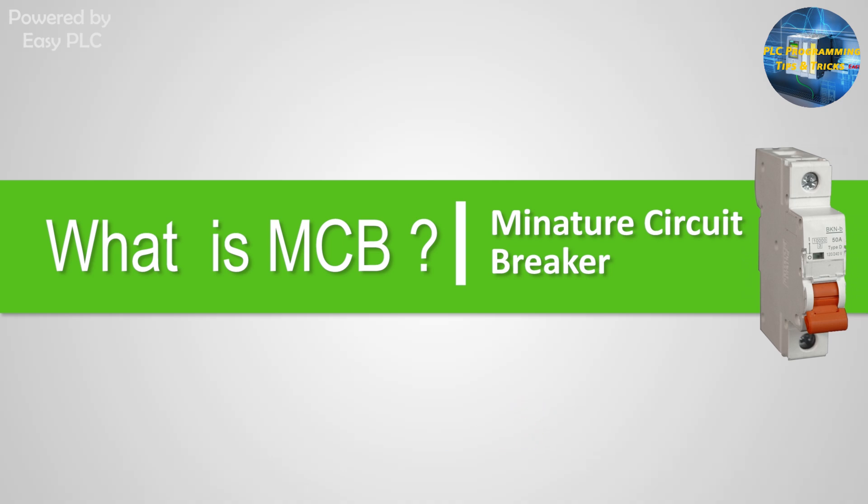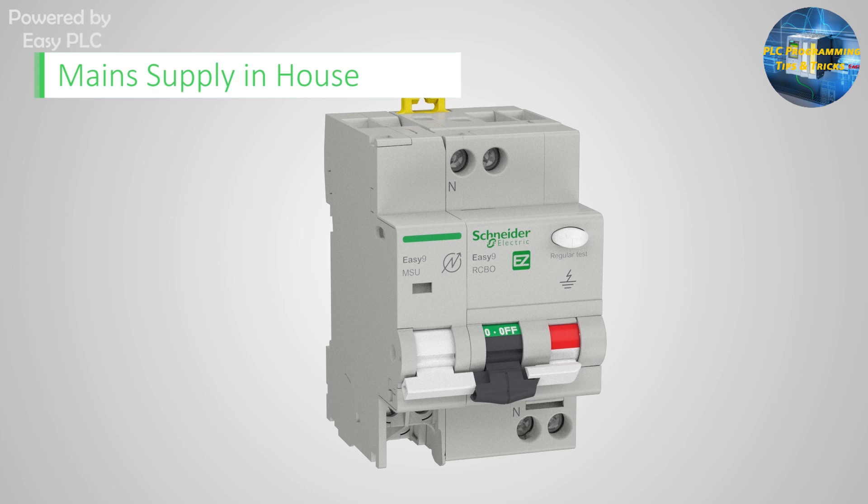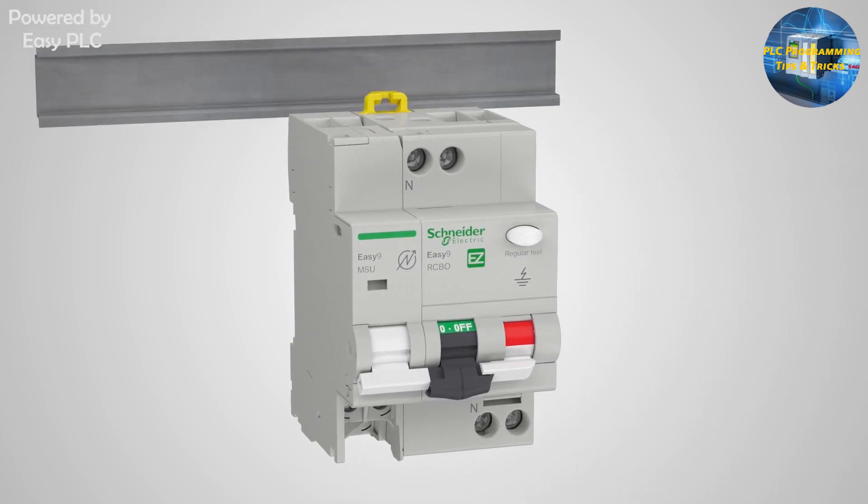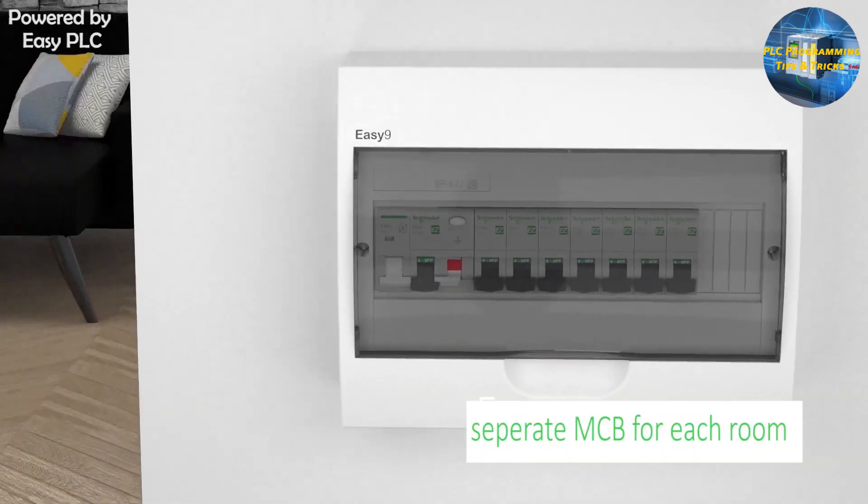MCB stands for Miniature Circuit Breaker. You can see the MCB installed in the main distribution panel in your home. The main power which comes in our house gets distributed to different areas and rooms through these MCBs.